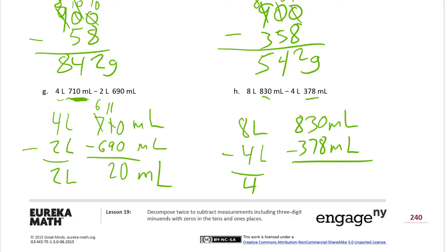We have plenty of milliliters in the next problem, so we don't have to worry about breaking up any liters — liters are like thousands, just another place value. We subtract liters from liters and milliliters from milliliters. We break up a ten since we have no ones, leaving 2 tens and giving us 10 ones. 10 minus 8 is 2. Then 2 tens minus 7 — not enough — so we break up a hundred, leaving 7 hundreds. 10 plus 2 gives us 12 tens. 12 minus 7 is 5, and 7 hundreds minus 3 hundreds is 4 hundreds. These are milliliters.